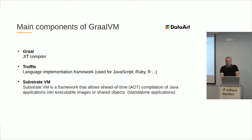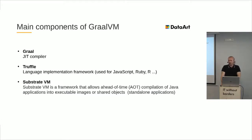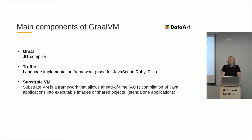To summarize, the main components of GraalVM are: first, a JIT compiler named Graal; second, a special framework called Truffle, whose main purpose is to write interpreters for your own languages; and using special tools, it's possible to translate these interpreters into executable programs that run on HotSpot VM. There is also a special component called Substrate VM, which uses the Graal compiler for generating native images close to the machine code, doing ahead-of-time compilation.